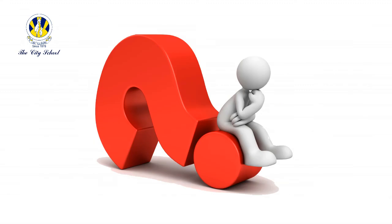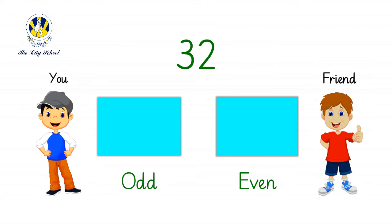Now go ahead and take a quiz to see your progress. Is number 32 an odd number or an even number? Bravo! It is an even number, as number 32 ends with 2.